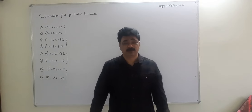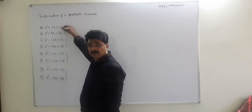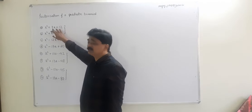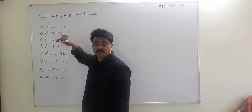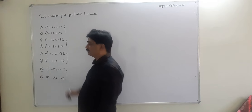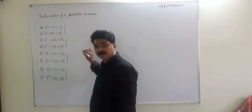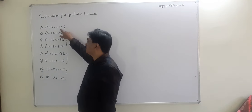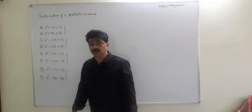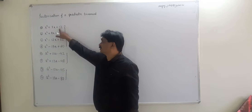If the sign of the constant term is positive, then when you split the middle term, both signs remain the same. You need two numbers whose product is twelve and whose sum is seven.